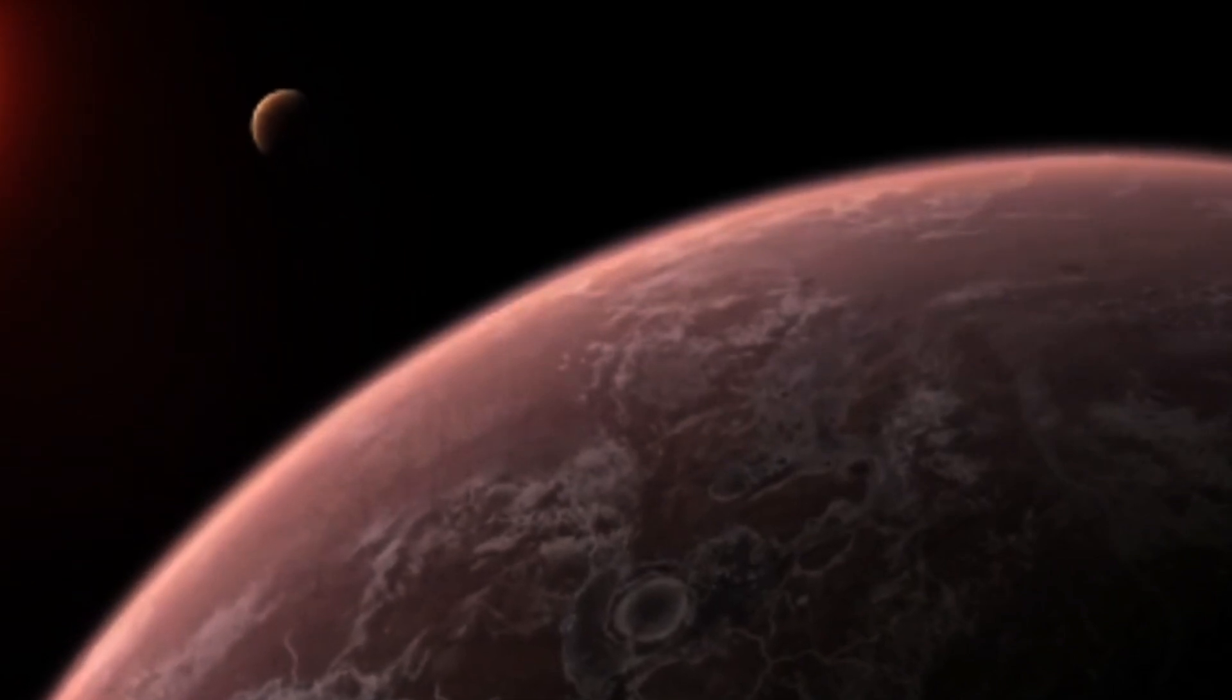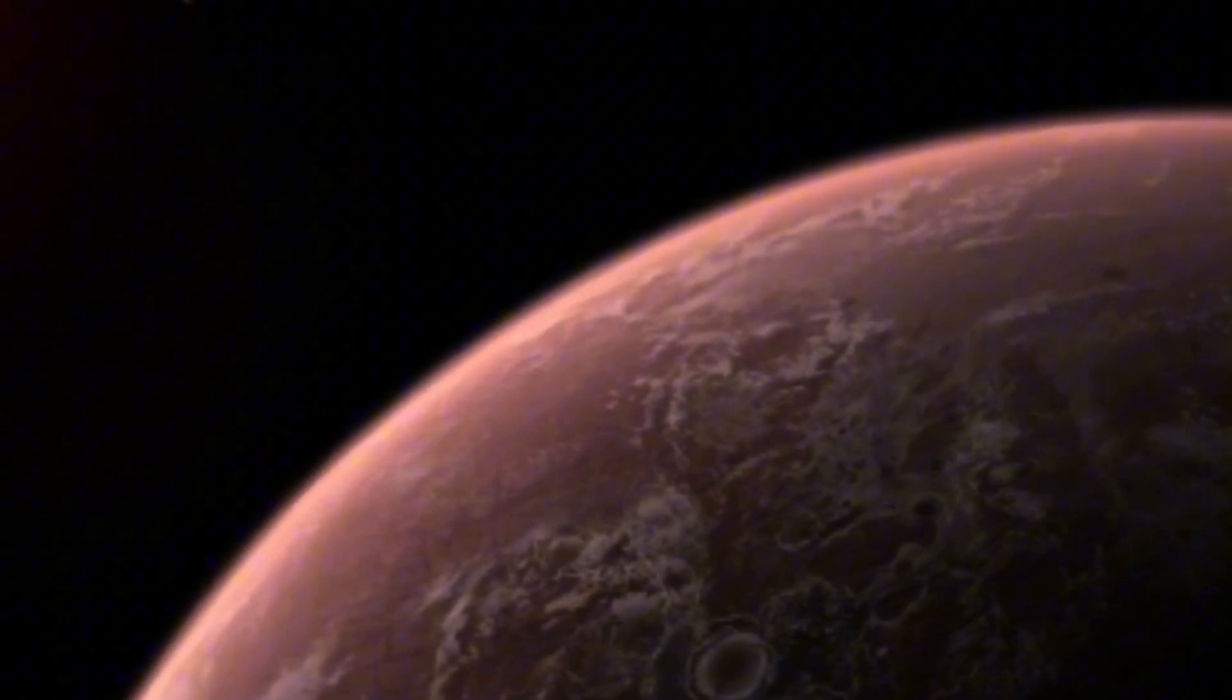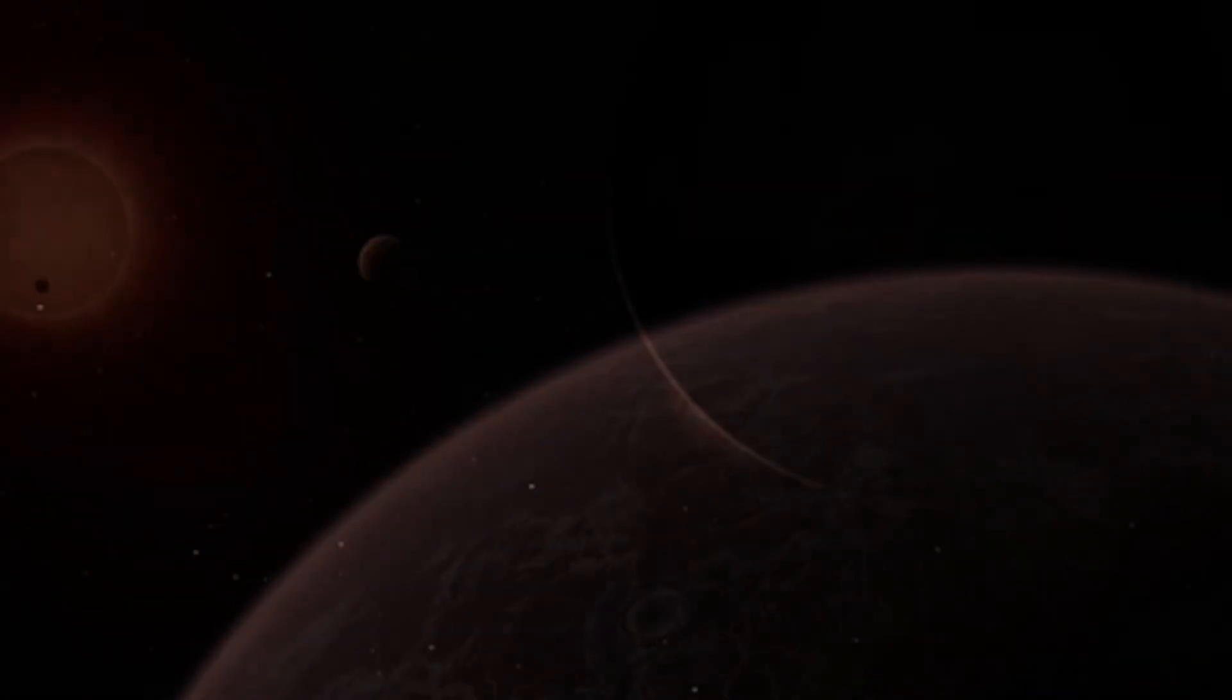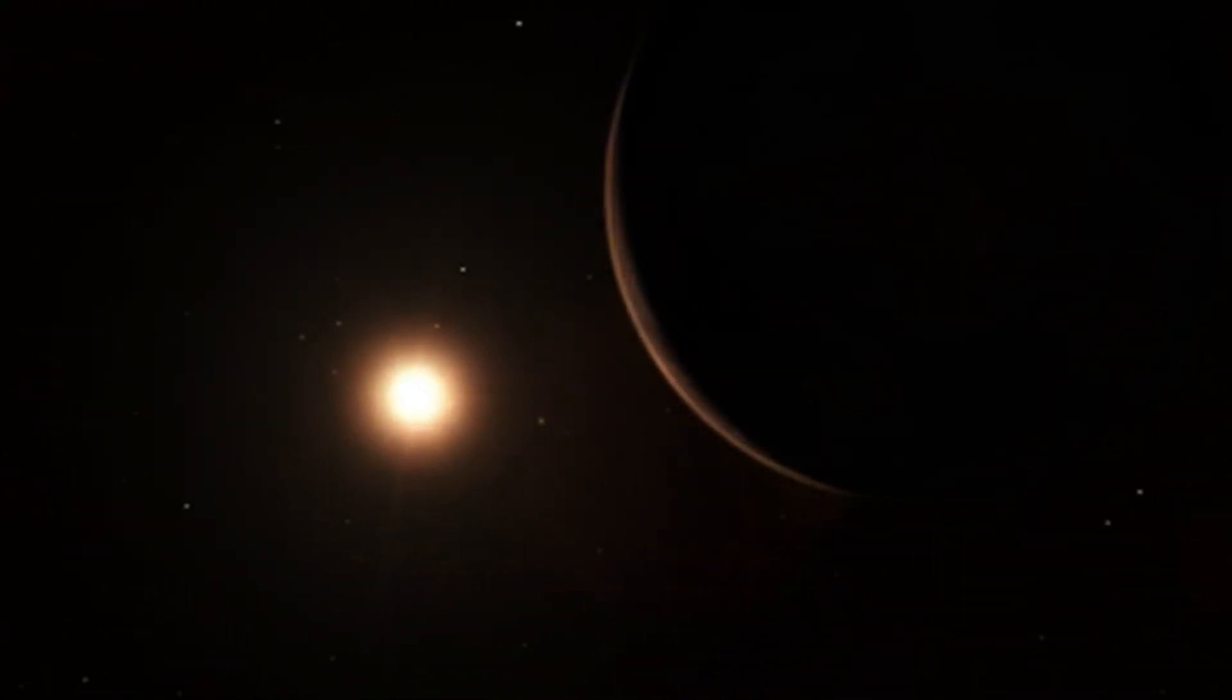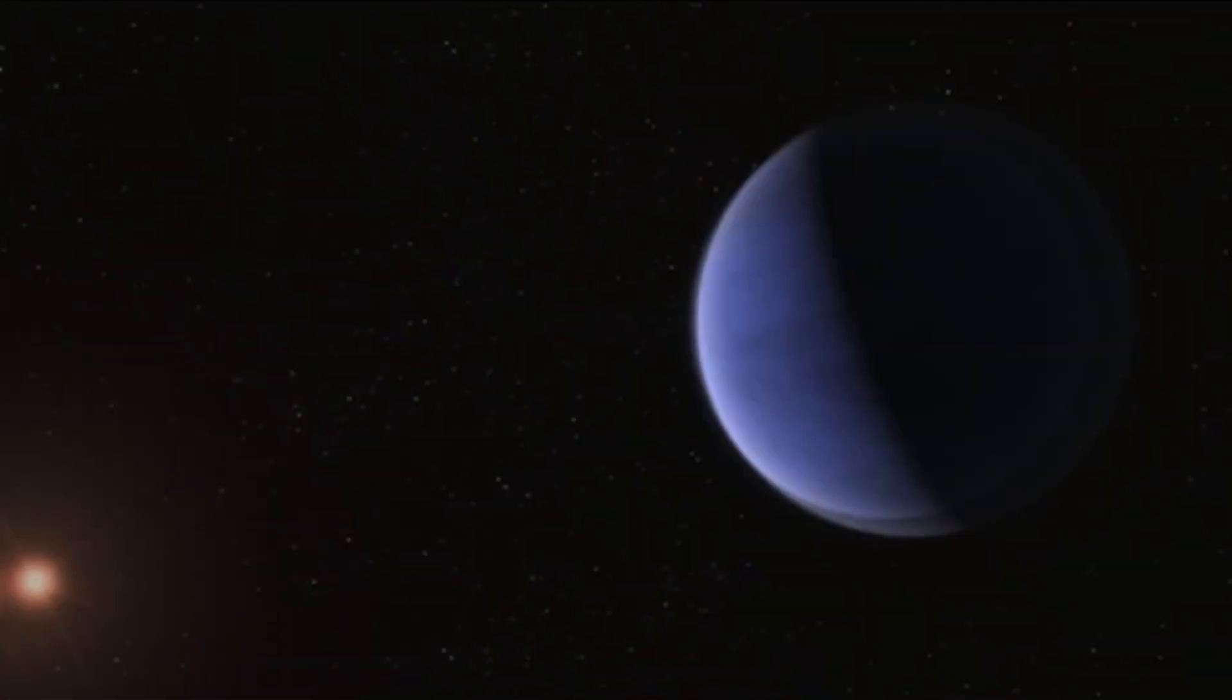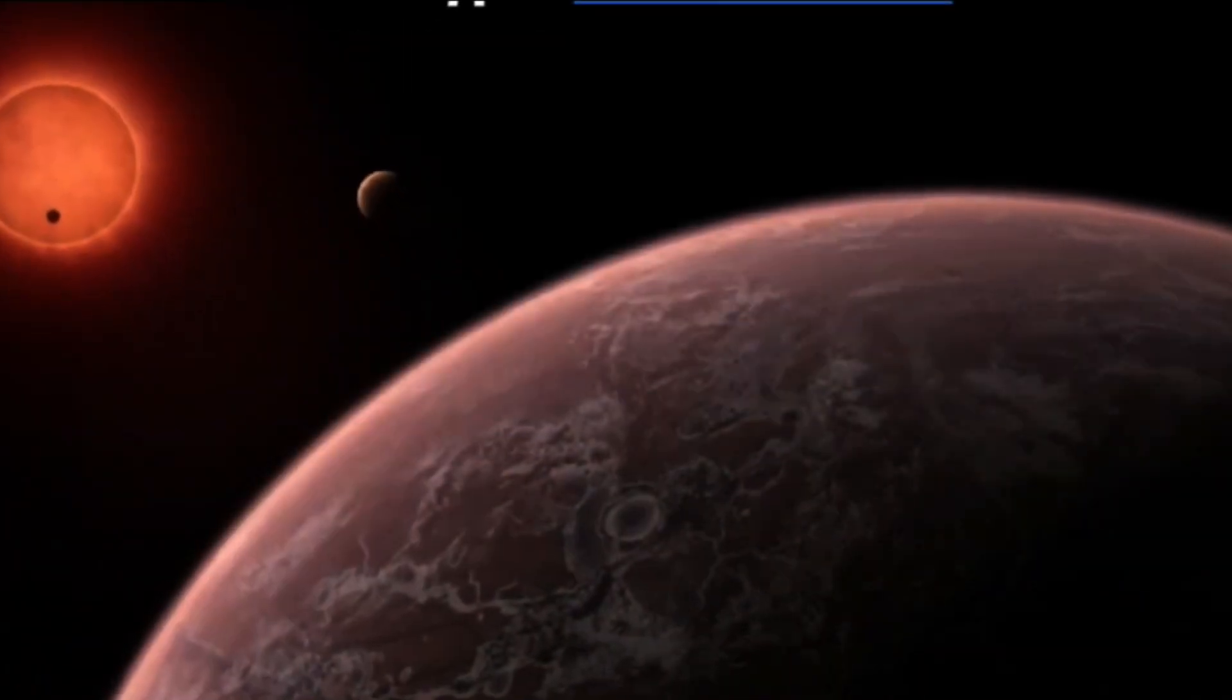He reflects on the initial excitement surrounding the TRAPPIST-1 planets, which were deemed potential candidates for hosting life due to their placement within the habitable zone of their star, where conditions are conducive to liquid water. Yet the challenge lies in the vast distances separating us from these distant worlds. The TRAPPIST-1 system, orbiting an M dwarf star smaller and redder than our Sun, is approximately 235 trillion miles away, a daunting distance that currently prohibits direct exploration.